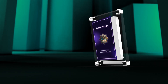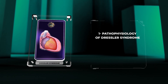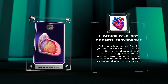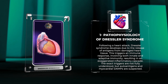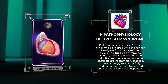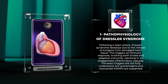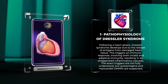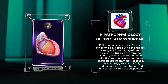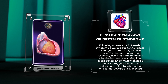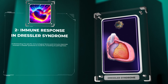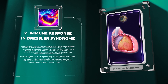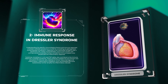Following a heart attack, Dressler syndrome develops due to the release of antigens from damaged heart tissue. This triggers an immune response involving both innate and adaptive immunity, resulting in an exaggerated inflammatory cascade. The exact triggers are not fully understood, but autoantigens and myocardial DAMPs are suspected. Understanding the specific immunological factors and immune responses involved in Dressler syndrome is crucial for unraveling its pathogenesis.